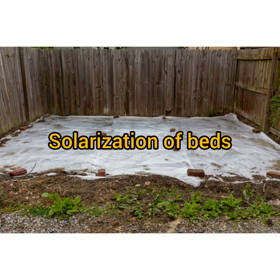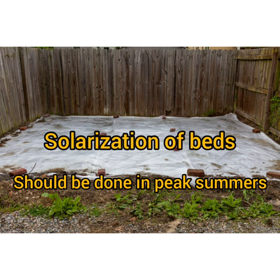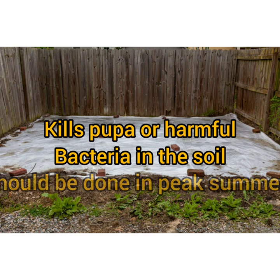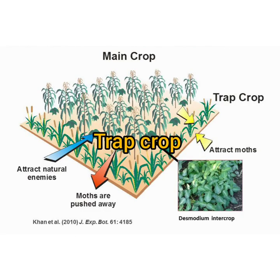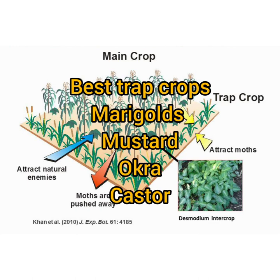The next method is solarization of beds. During summers and hot periods, a plastic cover is placed over the bed to kill pupae and harmful bacteria in the soil. Also, trap crops — marigolds, mustard, okra, and castor — are used to attract and kill pests.